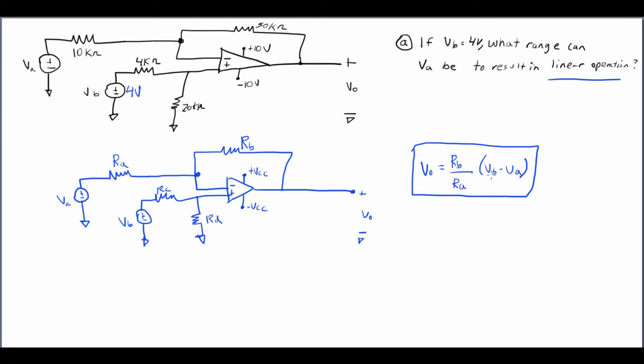What I can simply do is rewrite this equation in terms of VA. Doing so, I get: VA is equal to VB minus (RA over RB) times VO. I can then plug in different values of VO to get the corresponding values of VA. Let's plug in positive 10 volts for a saturated output.